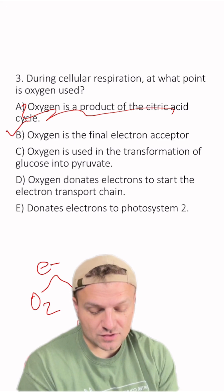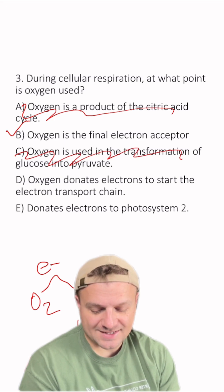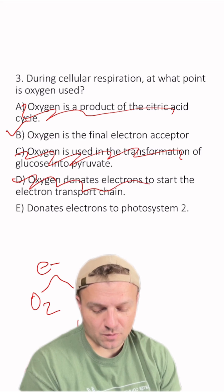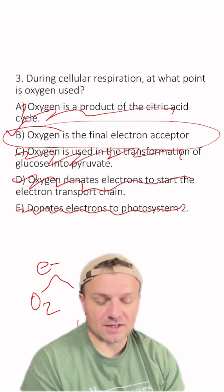C, oxygen is used in the transformation of glucose to pyruvate? Nope. D, oxygen donates electrons to start the electron transport chain? Nope. E, it donates electrons to photosystem II? Nope. That is why B is the correct answer.